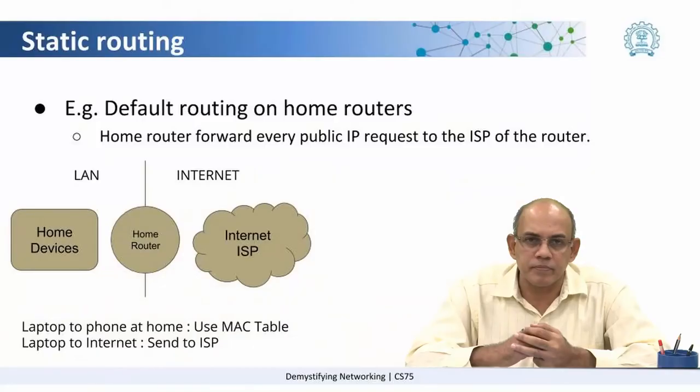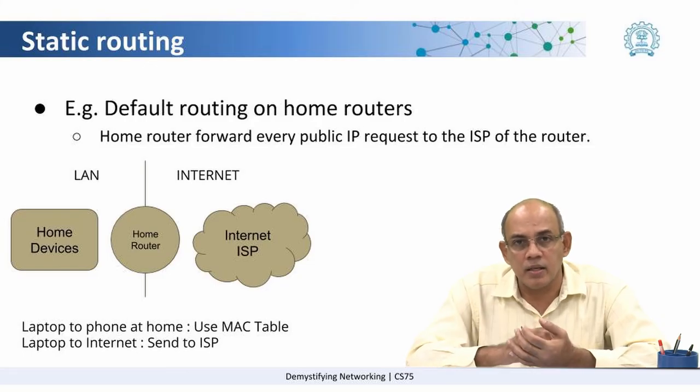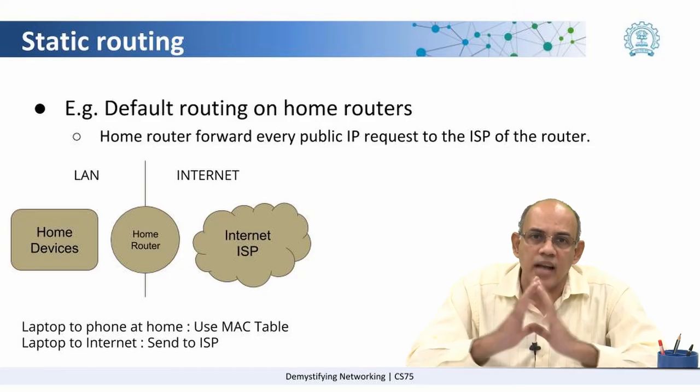While all this may sound somewhat complex, it is easy to follow when we do it in a packet tracer. We will start with static routing. Static routing is something we encounter very frequently — this is basically your home router. When your home router is connected to the internet ISP, what it is configured for on that link is a static route.